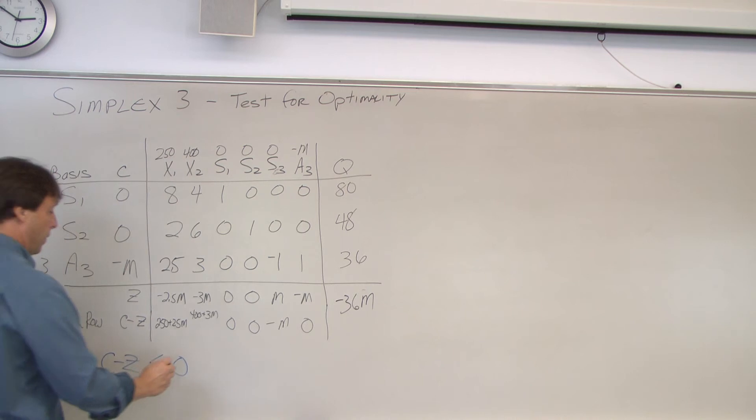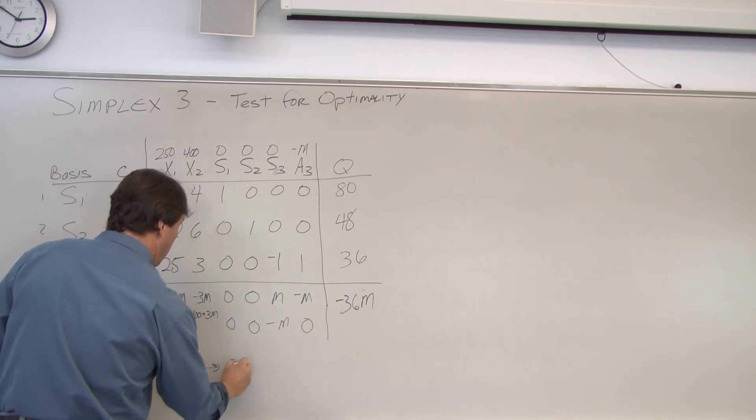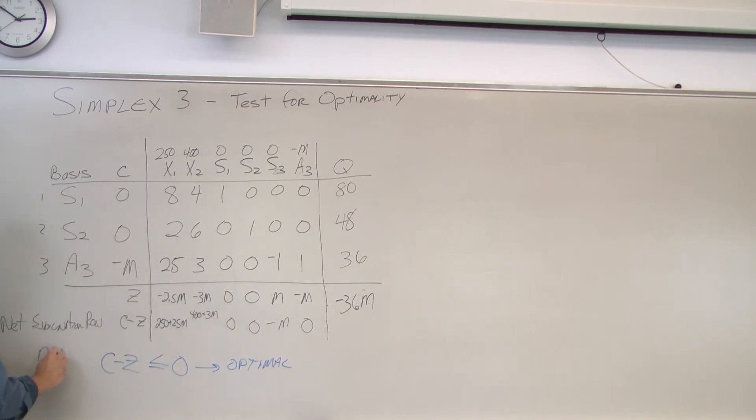So for a maximization problem, we want these to be negative or zero. In other words, telling us we can't make another unit of profit from manufacturing one more unit.